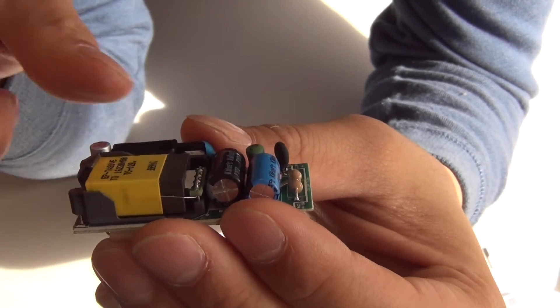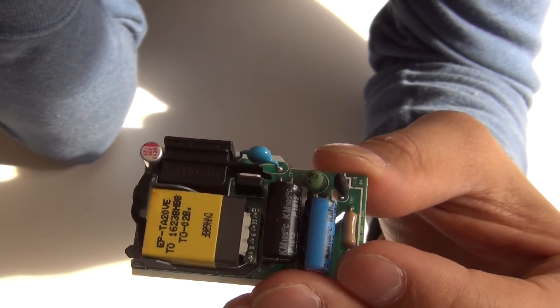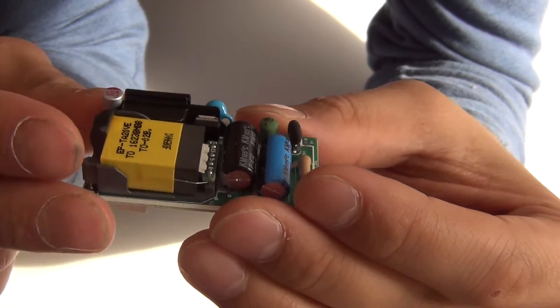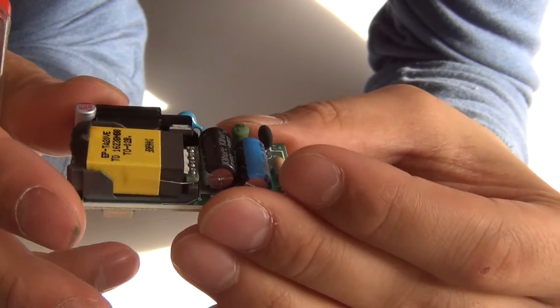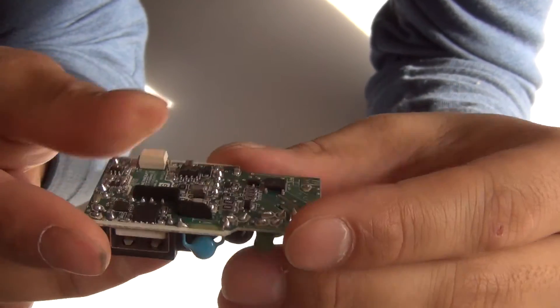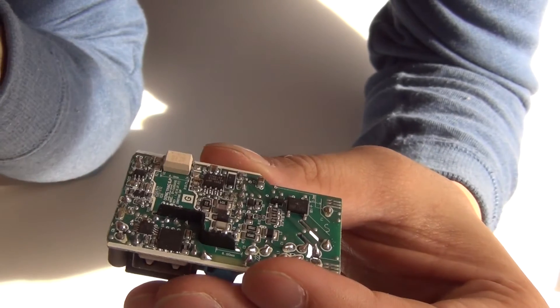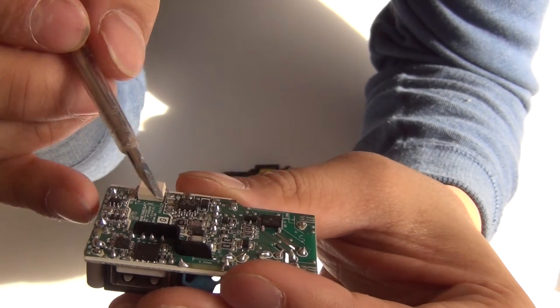The original charger has also a clear clearance between the high voltage side - so this is around 300 volts - and the low voltage side.